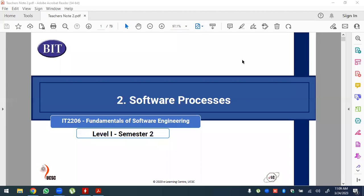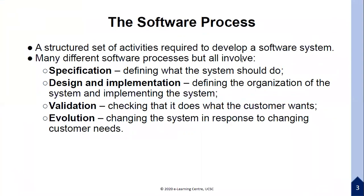Semester two, software engineering, chapter two: the software process, also known as the software development life cycle. A software process is a structured set of activities required to develop a software system. Many different software processes exist, but all involve specification, design and implementation, validation, and evolution.